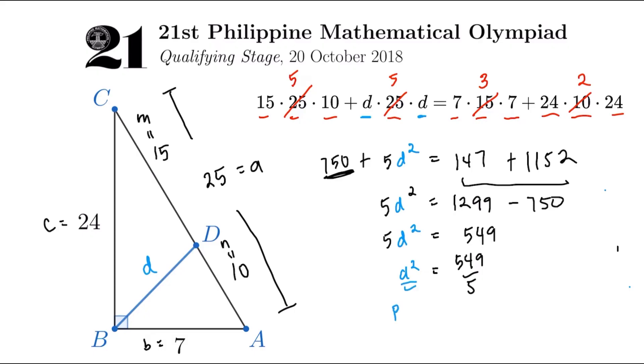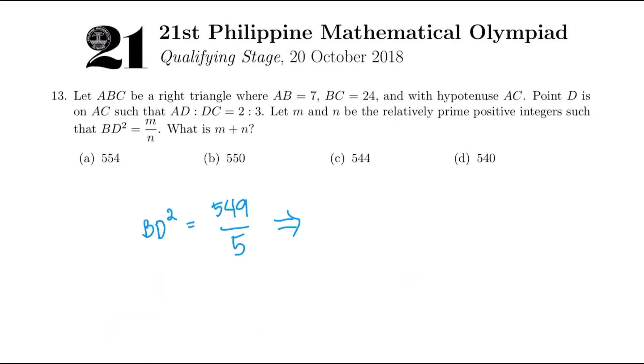So D squared would be equal to 549 over 5. So D squared is our BD squared in the question. But let's just go back to the question as always. BD squared is 549 over 5. But it says in the question that it's expressible as M over N in lowest terms. Now checking this one, it's already in lowest terms because 549 doesn't have a factor of 5. So M would be 549, N would be 5. So 549 plus 5, we're going to get the answer of 554.